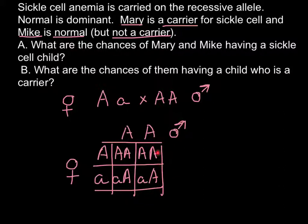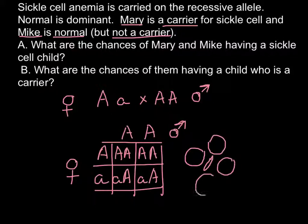As you can see, none of the progeny would be affected, because in order to be affected with this disease a child has to have both alleles as small a. As long as at least one allele is capital A, the child would have normal red blood cells — or only a very mild form. So the chances for Question A are 0%, because we don't have small a / small a for both alleles.